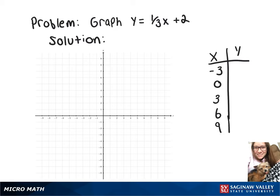When we put each of those values into the equation, we'll get y values of 1, 2, 3, 4, and 5. So we're just going to go ahead and plot each of those points, and then we'll draw a line going through those points.